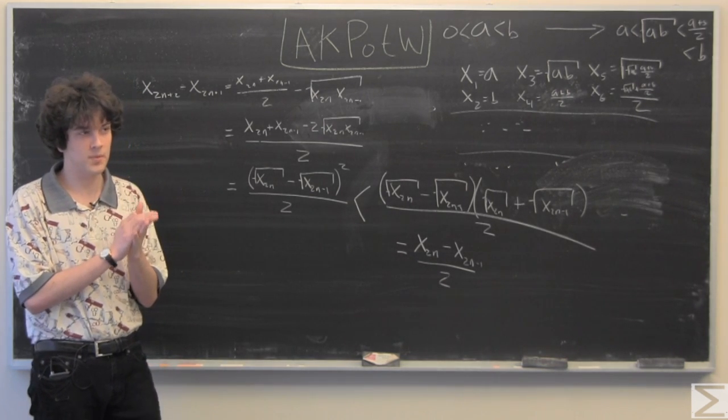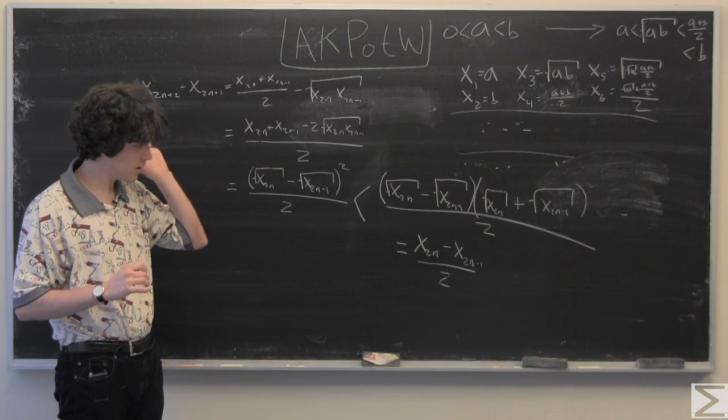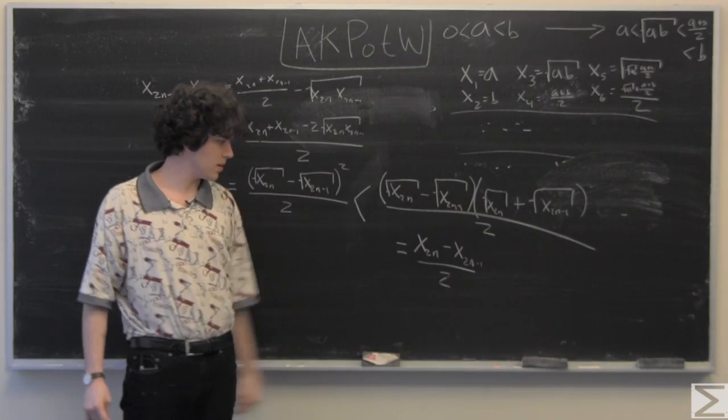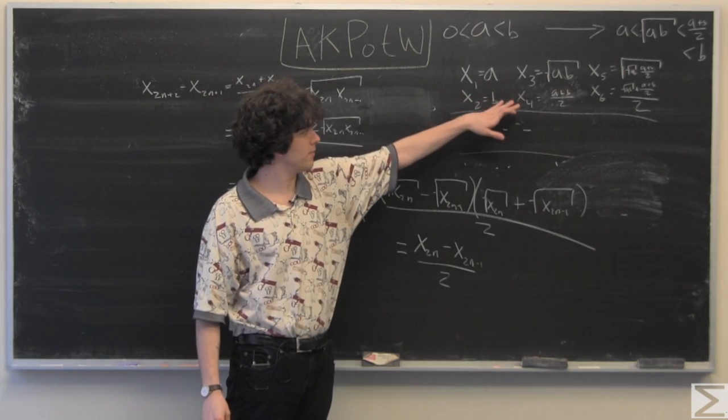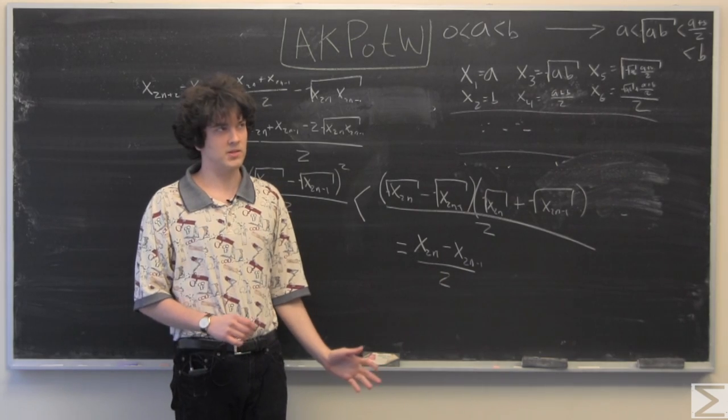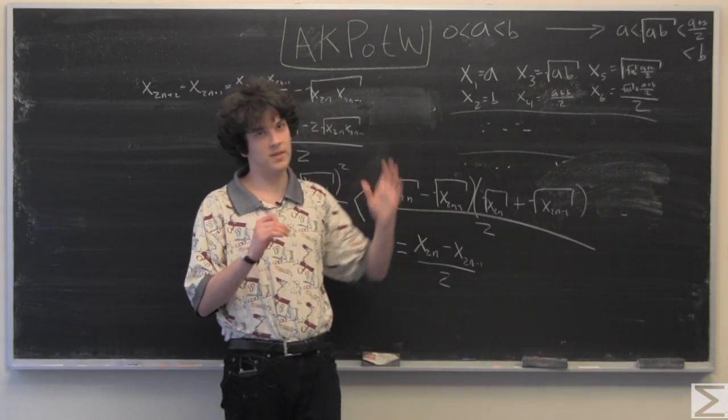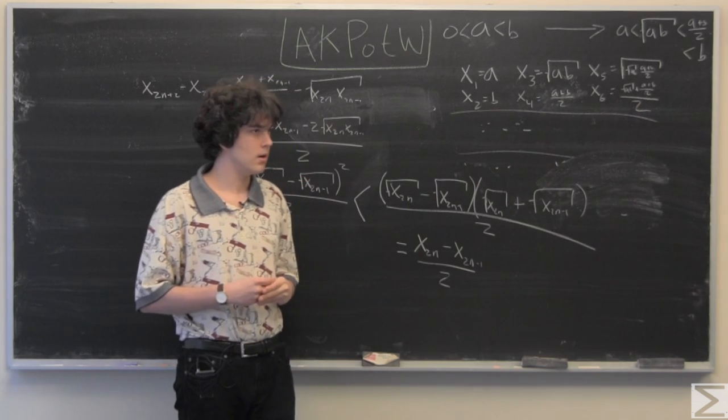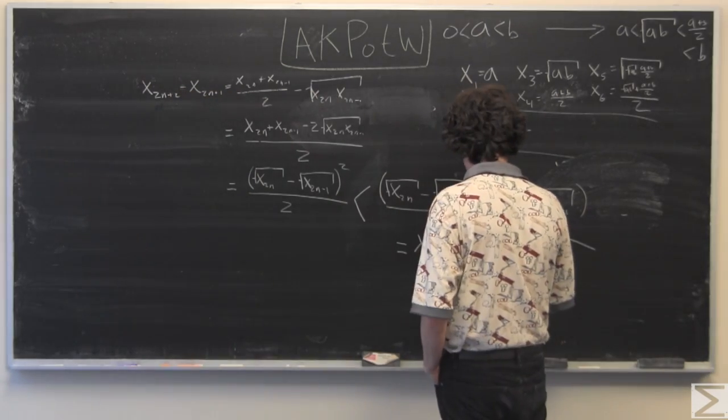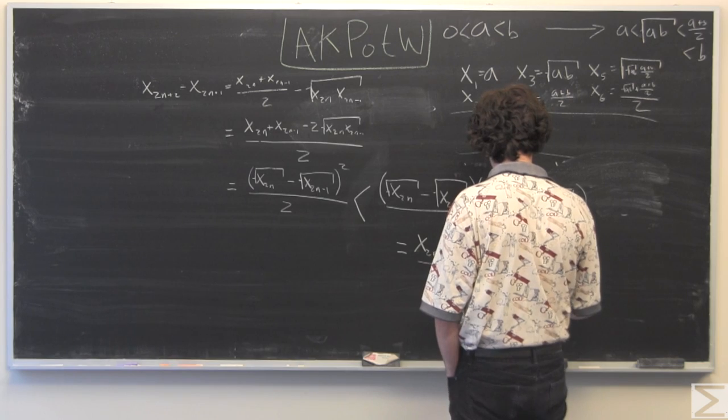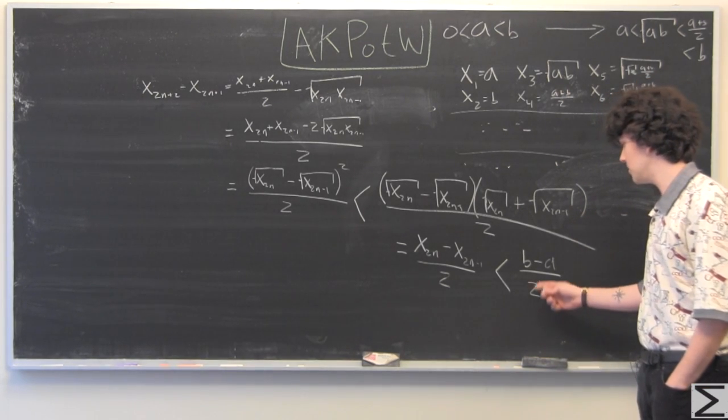This still just shows us the decreasing nature of these couplets, of the distance between terms in these couplets. It doesn't show us that it goes to 0. However, if we take b minus a to be our base case, we know that from x sub 4 to x sub 3, that's going to be b minus a over 2. And then x sub 6 to x sub 5, it's going to be that value divided by 2, which means we're getting smaller by a factor of 2 each time.